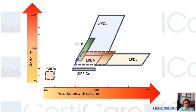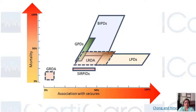Here is a slide I always refer to. On the x-axis is association with seizures, and on the y-axis is the mortality rate of patients in the ICU setting. LPDs are almost 60% to 100% associated with occurrence of seizure. Right behind them is LRDA, and then bilateral independent periodic discharges competing with LRDA. The mortality rate is quite high in patients with BIPDs. SIRPDs are less than 50%. LPDs are the bad boys of the epileptic world.